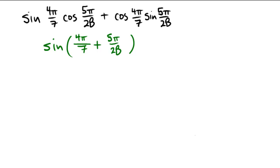To be able to do this, looks like we're going to need a common denominator going on here. So let's multiply by four, so that way we can get the sine of 16π/28 plus 5π/28.